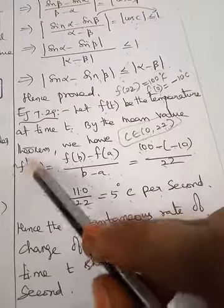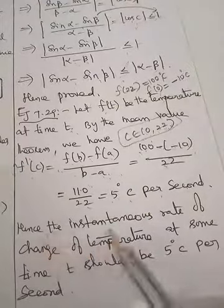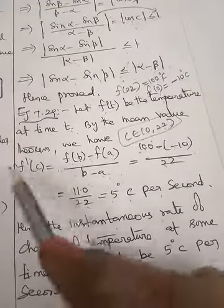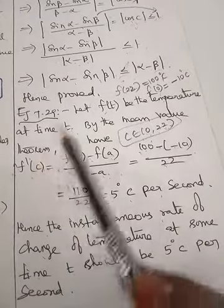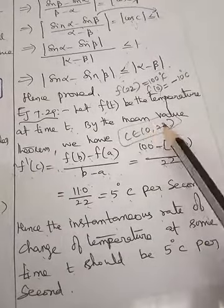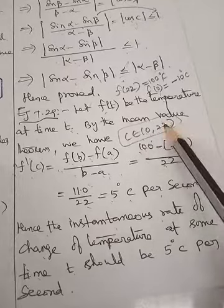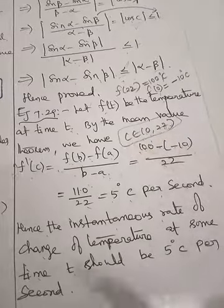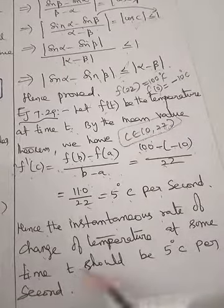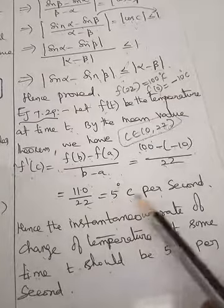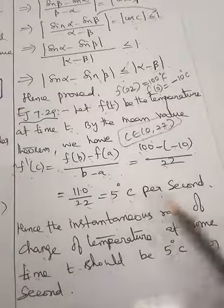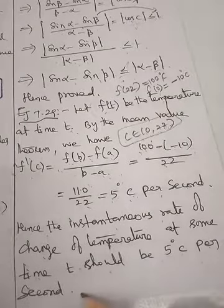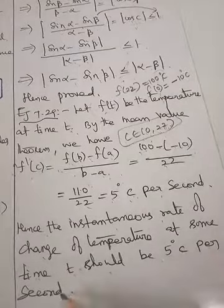Hence, the instantaneous rate of change of temperature at some point t should be 5 degrees Celsius per second. This is the rate of change of temperature, 5 degrees Celsius per second.